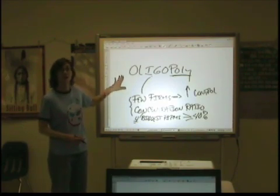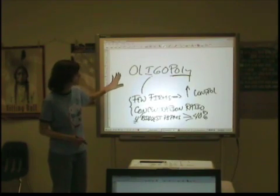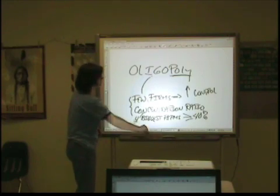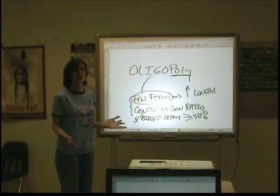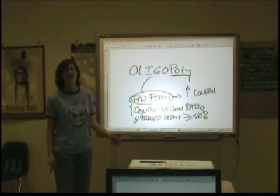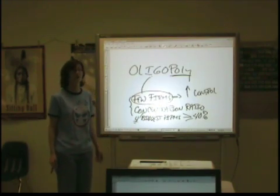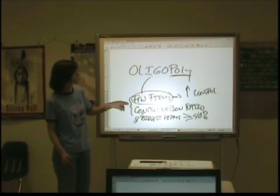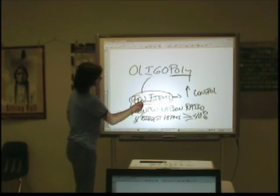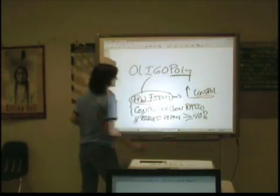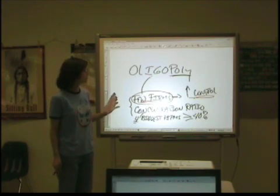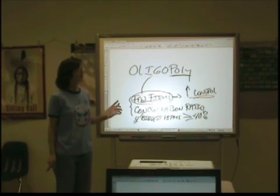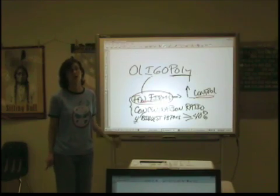With an oligopoly, the biggest difference is this: it doesn't matter if the product is the same or different. If it's a differentiated oligopoly, the product is different. If it's a homogeneous oligopoly, the product is homogeneous. What you're looking for is a few firms that dominate, and other firms can either get on board with their pricing decisions or not. We're going to look at what that does to their demand curves in just a minute.